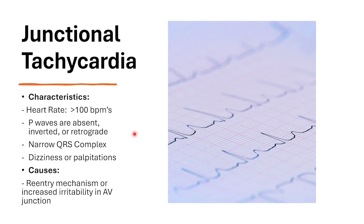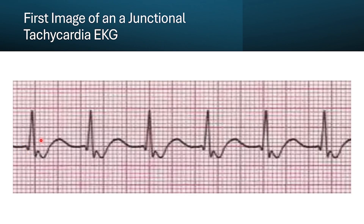For junctional tachycardia, the heart rate is greater than 100 beats per minute. P waves are absent, inverted, or retrograde, with a narrow QRS complex. Patients may experience dizziness or palpitations, and it can be caused by a re-entry mechanism or increased irritability in the AV junction. We see abnormal P waves and an increased heart rate. Altered mental status may also appear. In this EKG, P waves are flattened in every beat and the QRS complex is less than 0.12 seconds. We can't measure the PR interval because it's absent. The QRS complexes match up with each other, and some ischemia may be visible.